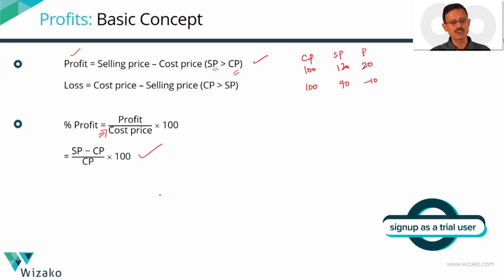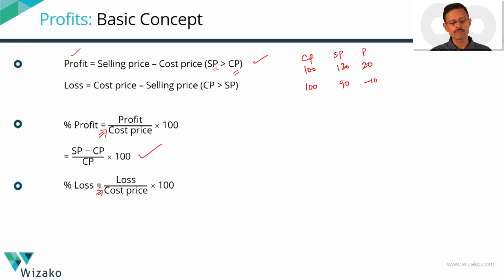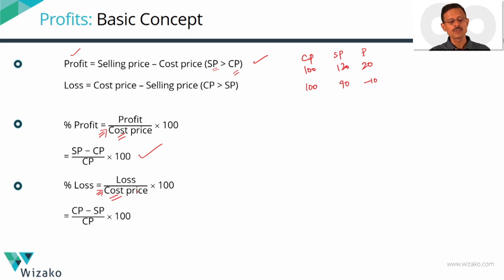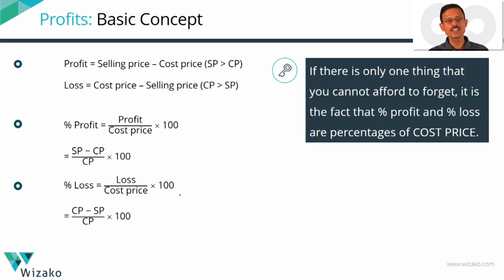Percentage loss is equal to loss divided by cost price, multiplied by 100. In this case as well, the denominator is the cost price. Loss is cost price minus selling price, so percentage loss equals (cost price minus selling price) divided by cost price, times 100. The most important thing to notice: the denominator for computing both percentage profit and percentage loss is the cost price. So if someone says the trader made a 20% profit, that is 20% of the cost price. Similarly, a 10% loss means 10% of the cost price.